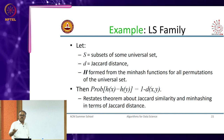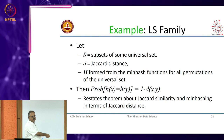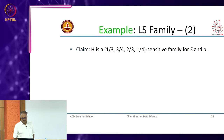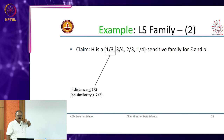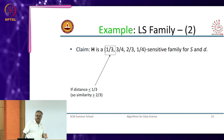For the Jaccard distance hash function, the probability that the two hash values are the same equals the similarity of x and y. Converting to Jaccard distance it is 1 minus similarity. So the probability h(x) equals h(y) is 1 minus the distance of x and y. For the min hashing family we looked at, it is a one-third, three-fourths, two-thirds, one-fourth sensitive family.